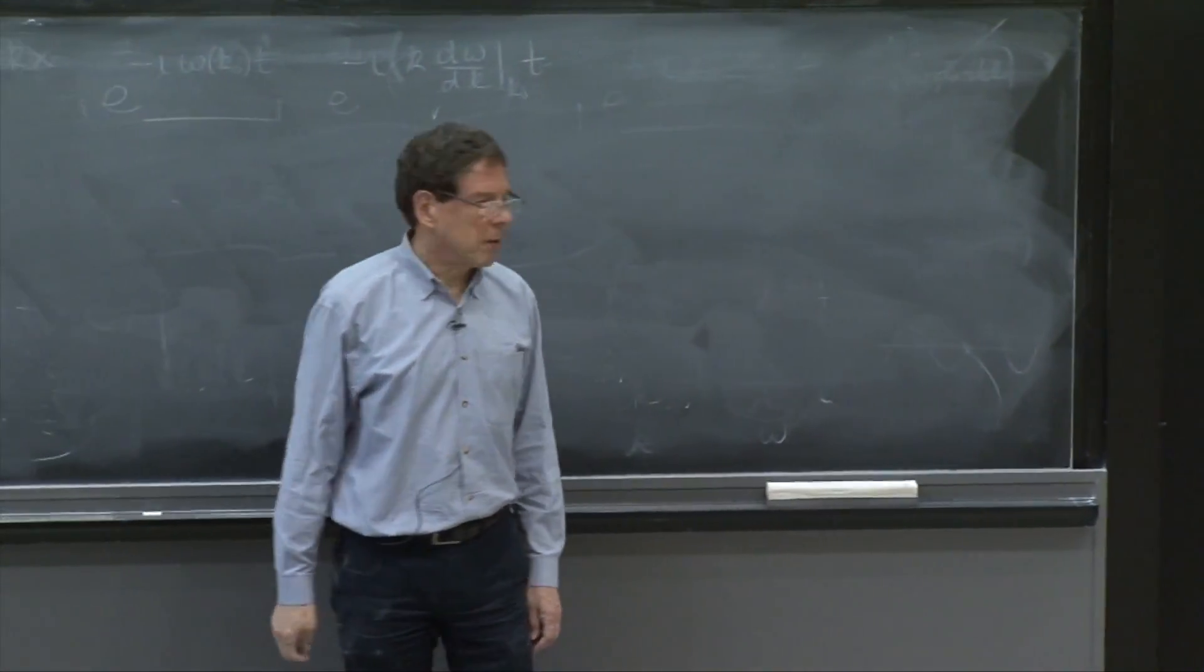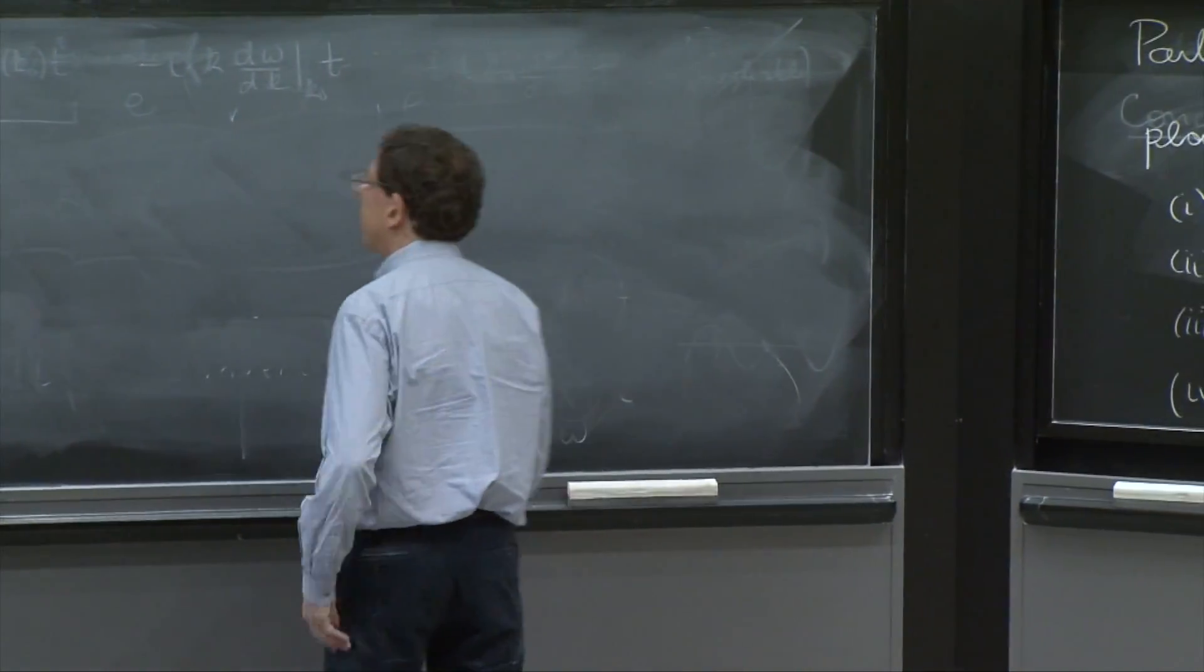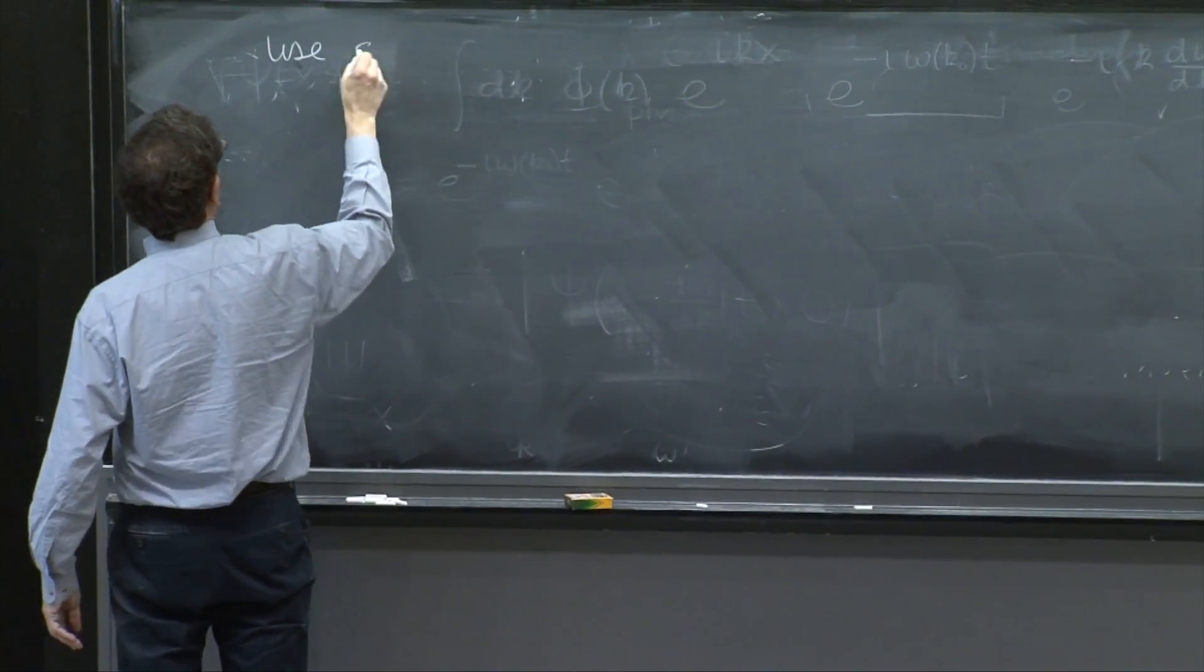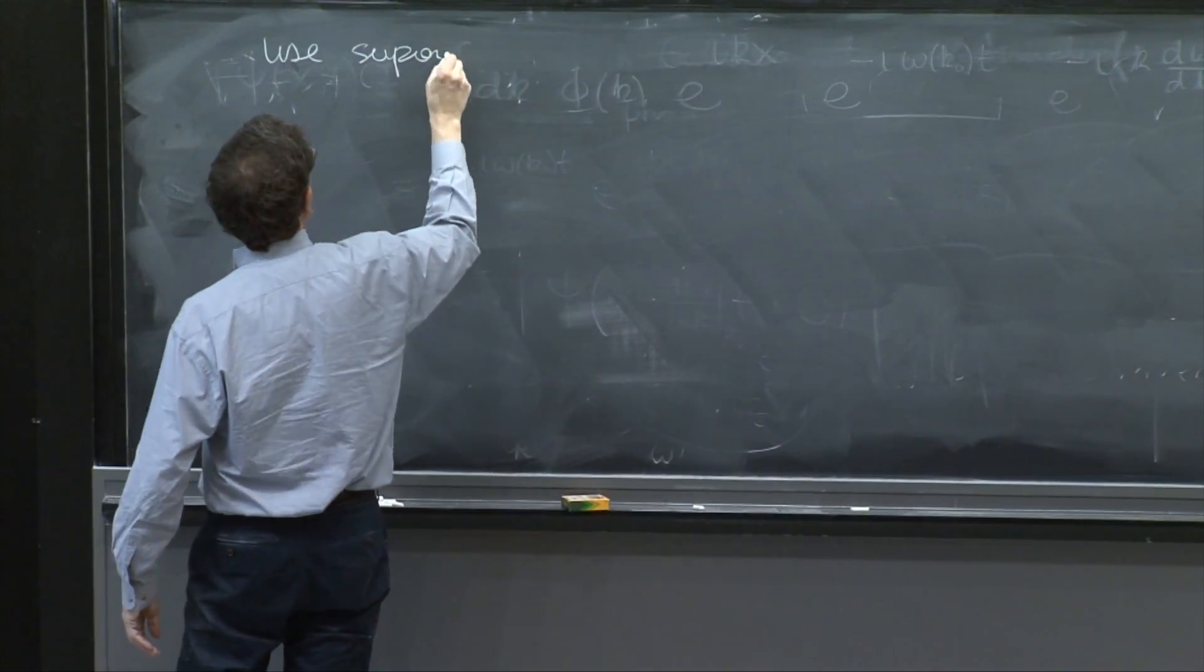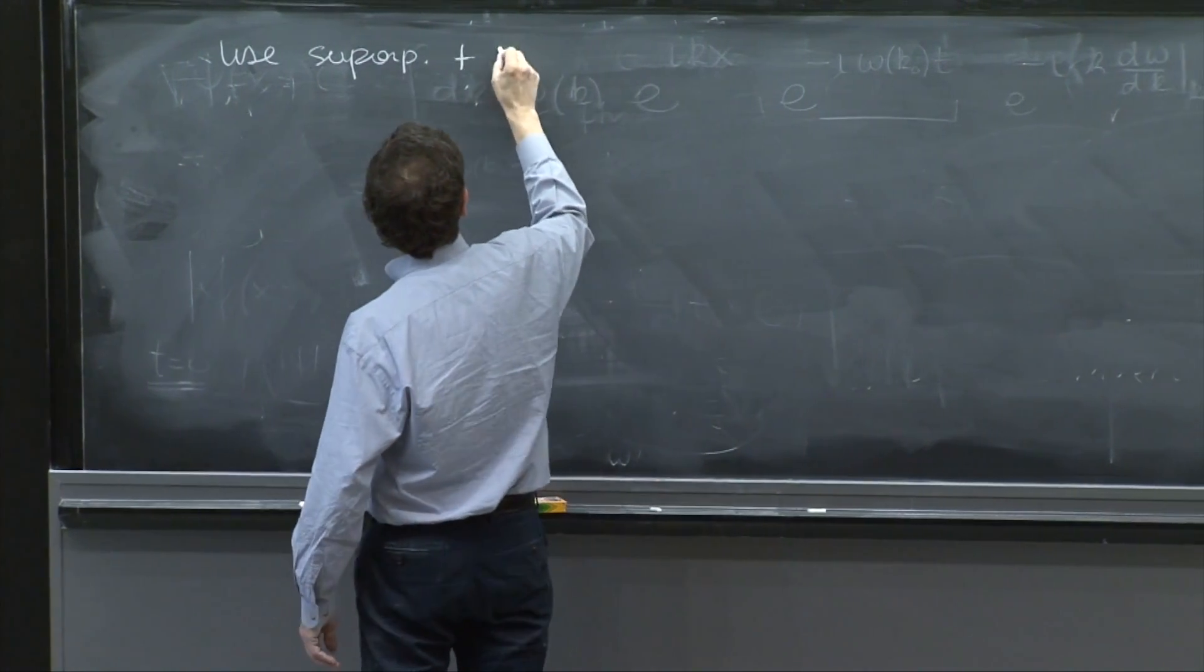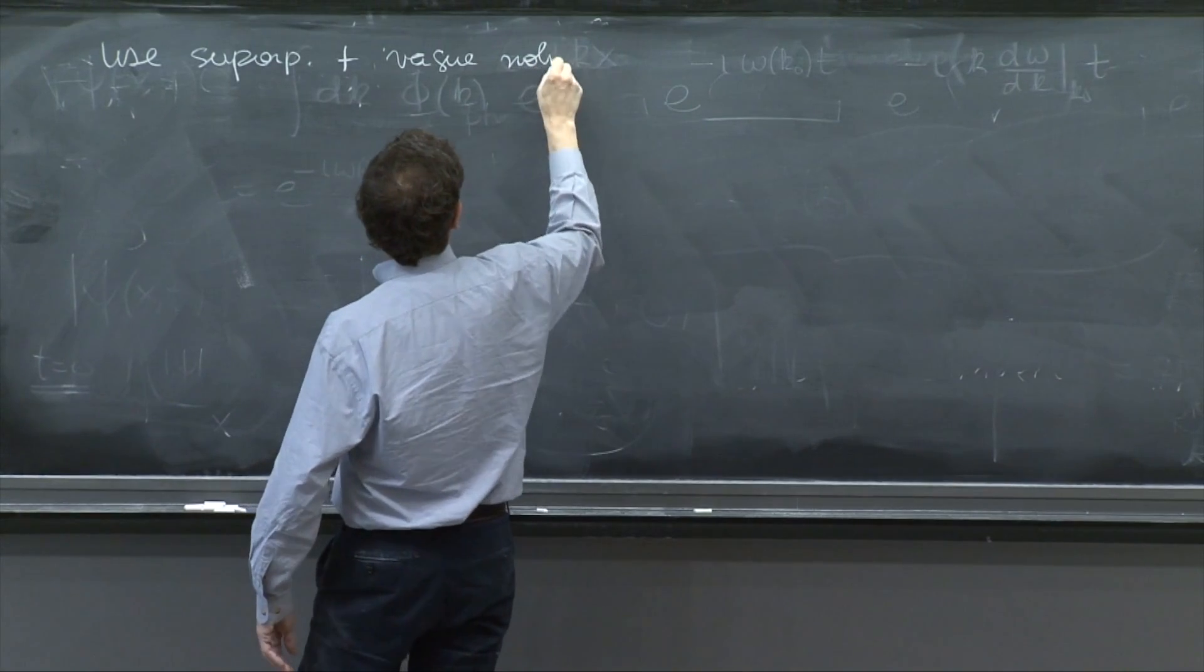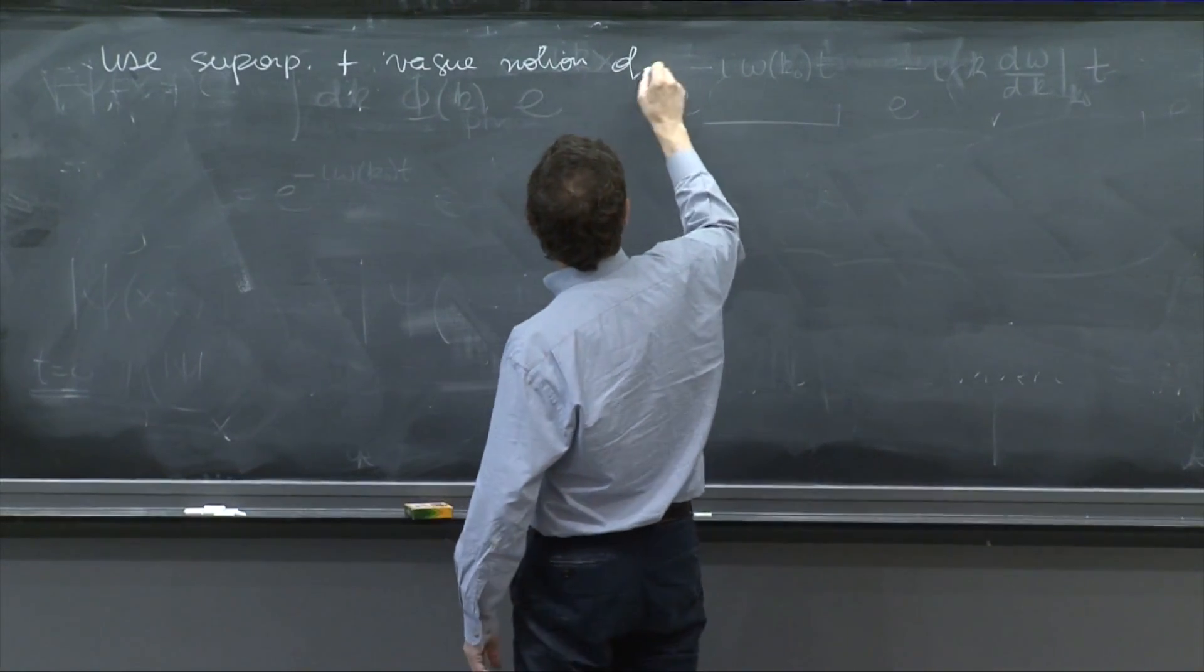So my first argument is going to be, if it's all going to be based on superposition, use superposition plus vague notion of probability.